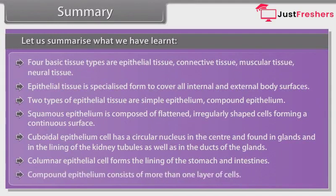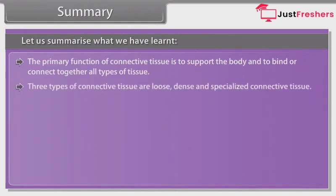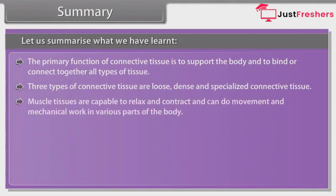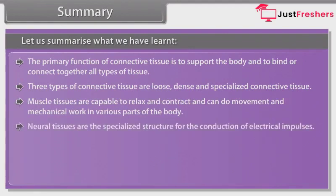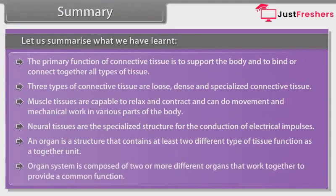Compound epithelium consists of more than one layer of cells. The primary function of connective tissue is to support the body and to bind or connect together all types of tissue. Three types of connective tissue are loose, dense, and specialized connective tissue. Muscle tissues are capable of relaxing and contracting and can do movement and mechanical work in various parts of the body. Neural tissues are specialized structures for the conduction of electrical impulses. An organ contains at least two different types of tissue functioning as a unit. Organ system is composed of two or more different organs working together to provide a common function.